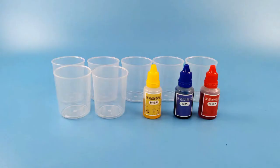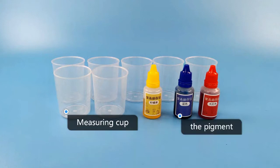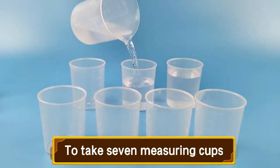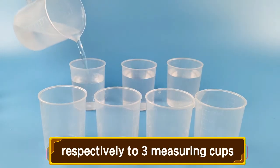Color master experimental materials: measuring cups and pigment. Experimental steps: Take seven measuring cups, respectively using three measuring cups.